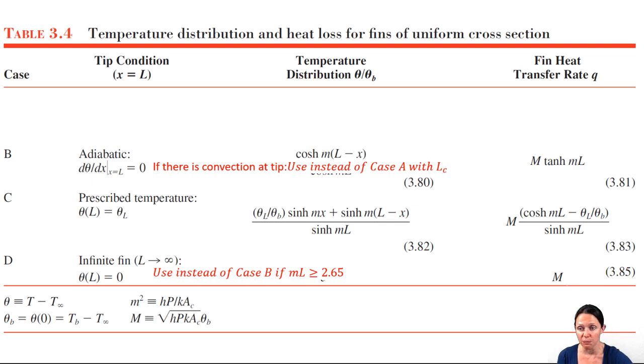That corresponds, as you might recall, to the value of ML where Q for case B is 99% of Q for case D. If it's less than 2.65, just use case B.